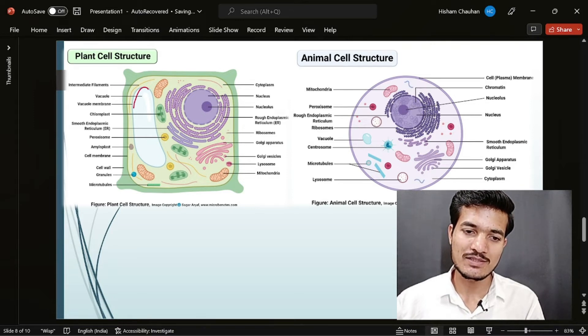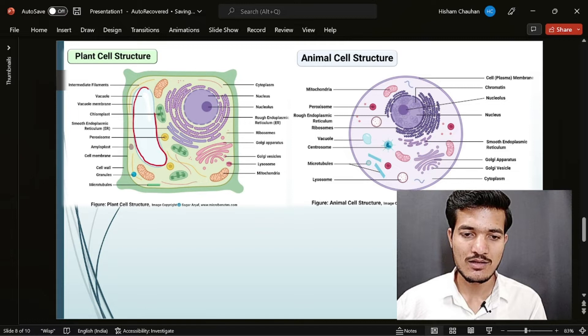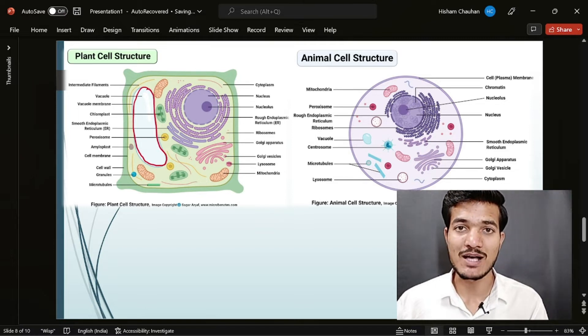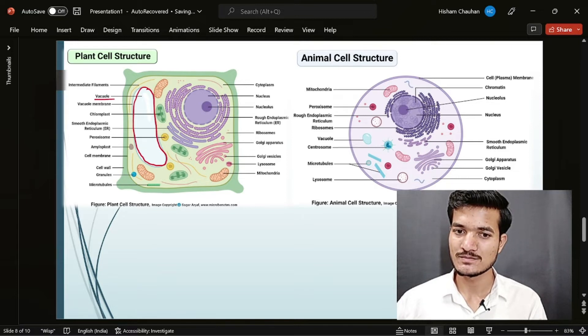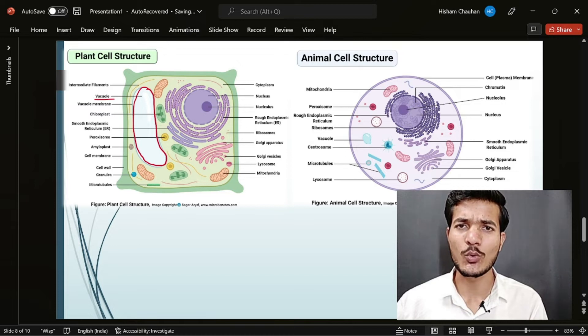Okay, in the plant cells we can observe this large structure right here which covers the maximum part of a cell. This is what we call a vacuole. What is the function of vacuole? It's actually a storehouse of a cell.